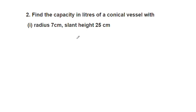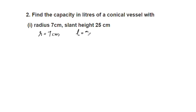The capacity is the same as the volume. The formula for volume of the conical vessel is 1/3 × π × r² × h. The radius is 7 cm and slant height is 25 cm.